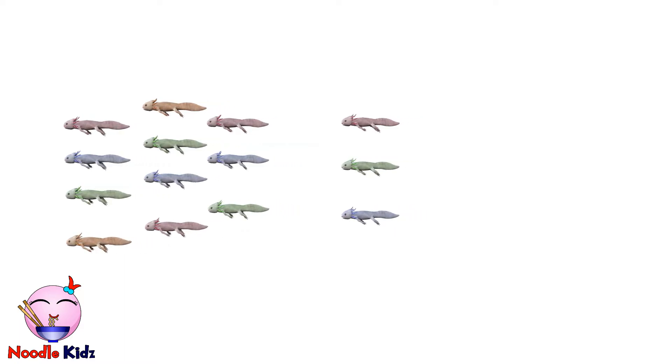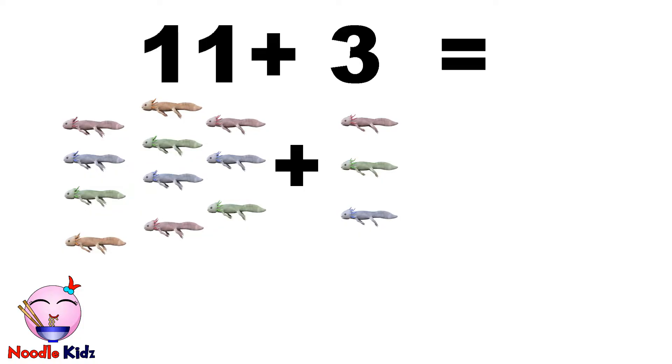Now what about 11 axolotls plus three axolotls? Should we use our toes as well? No. Don't be afraid. It is actually very easy. Let's write down the equation. Write down 11 plus 3 and an equal.